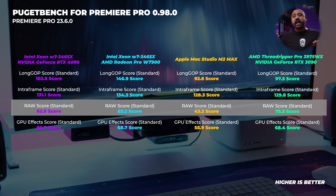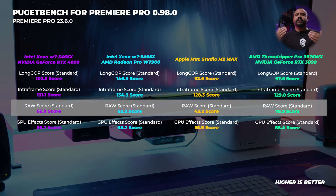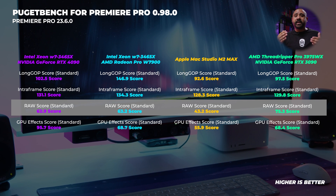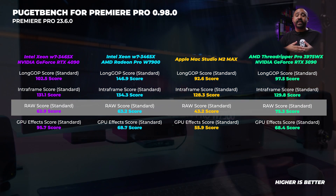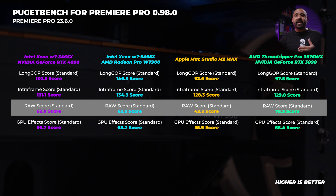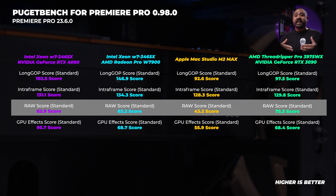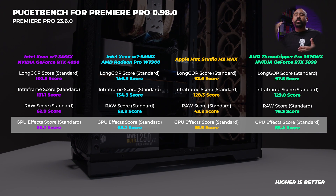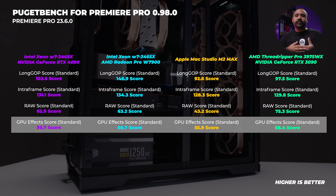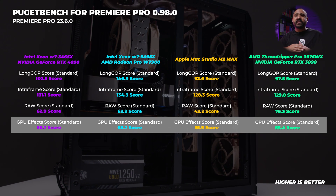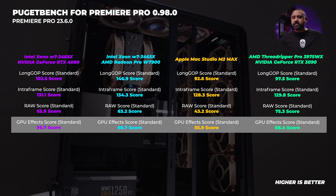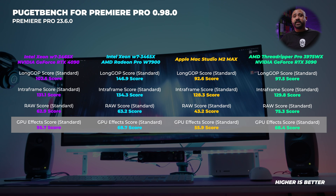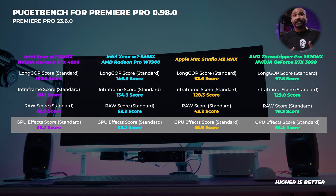The RAW score is based on Red RAW decoding and editing. RAW codecs demand lots of CPU cores for playback and editing, and the Threadripper Pro comes out on top here — mainly because it's a 32-core CPU as opposed to the 28-core Xeon and the 12-core Mac Studio. It scales exactly as predicted. Lastly, the GPU effects score is where CUDA wins every single time. The RTX 4090 has more CUDA cores so it wins. Metal and OpenCL are just not as optimized as CUDA for effects in Premiere Pro, and it's always been this way.